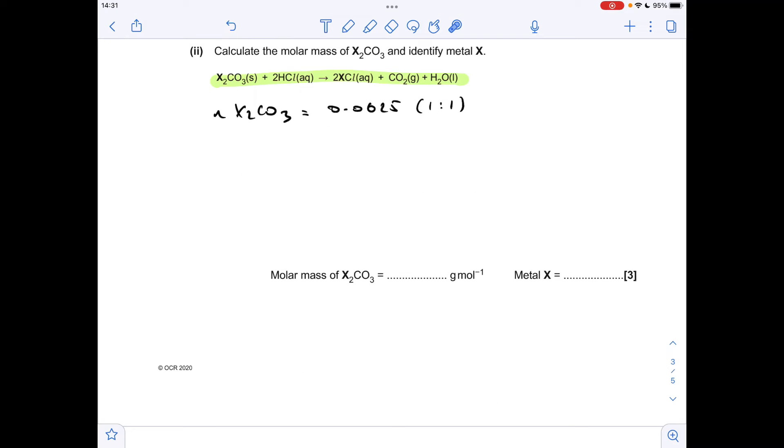Moving on to the next part, we've got to calculate the molar mass of the X2CO3, and then identify the metal. That's just to remind you of the equation. I've already established the moles of X2CO3 being the same as the moles of CO2, because of this one-to-one ratio. Next thing I'm doing is working out the mass of X2CO3 used in the experiment. So that's 14.57 grams from the first two mass readings in the table. So the MR of X2CO3, mass over moles, 233.12.